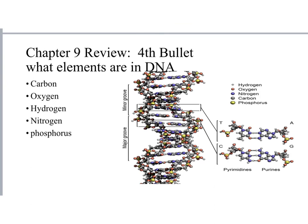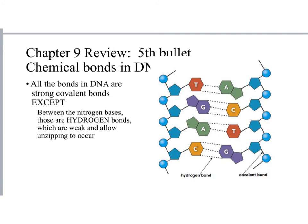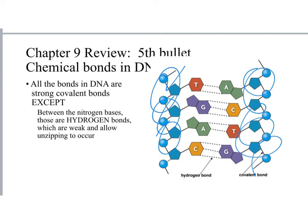Know what elements are in DNA. A nucleotide contains carbon, oxygen, and hydrogen. The nitrogen bases (A, C, T, G) contain nitrogen, and the phosphate group on the outside adds phosphorus. So DNA contains: carbon, oxygen, hydrogen, nitrogen, and phosphorus. Regarding chemical bonds: every bond within the DNA backbone is a covalent bond — strong bonds that keep the DNA structure intact. The only non-covalent bond is the hydrogen bond between nitrogen bases, which is weak enough to be broken when DNA needs to unzip for replication.